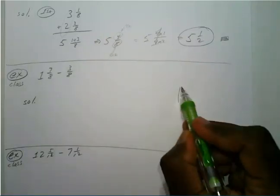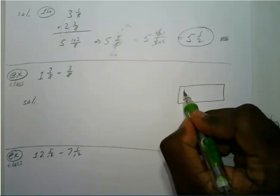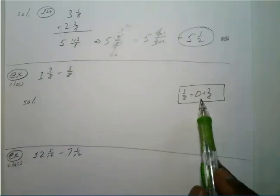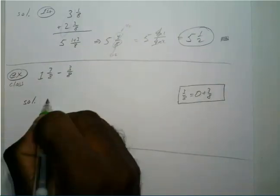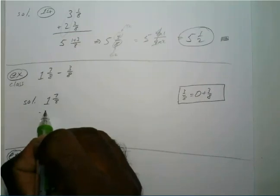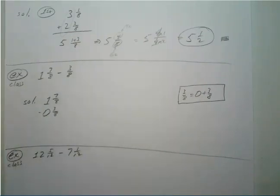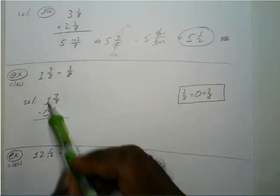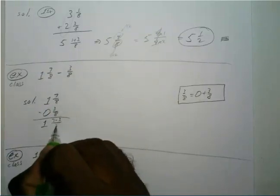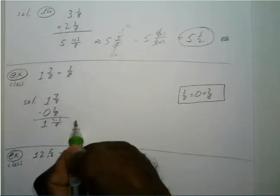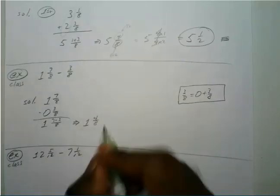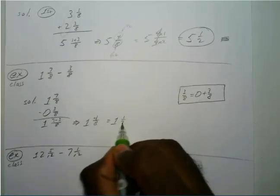For the first problem, note that three-eighths is just zero and three-eighths, so if you wanted to write a zero there for the vertical format you can. You have one and seven-eighths minus zero and three-eighths. Subtract: one minus zero is one, and seven minus three over the common denominator of eight gives four-eighths. Simplified, that gives you one and one-half as your final answer.